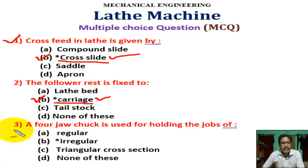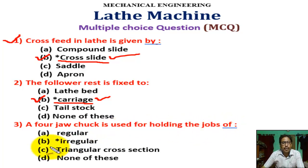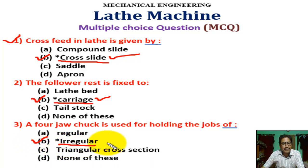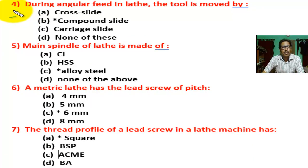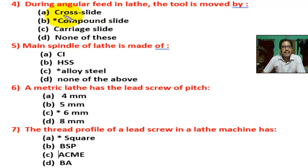Question number three: a four-jaw chuck is used for holding jobs of irregular shape — not regular shapes such as circles or hexagonal shape jobs. Correct answer is B. Question number four: during angular fitting in lathe, the tool is moved by — correct answer is B, compound slide is used for angular fitting.